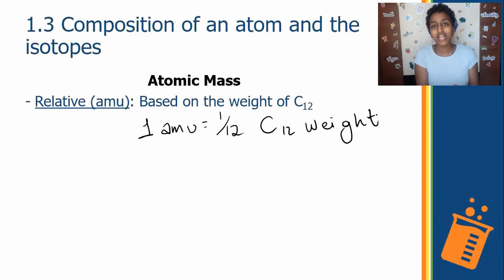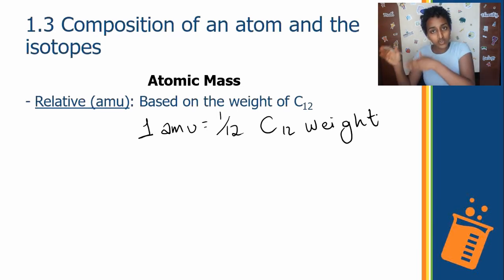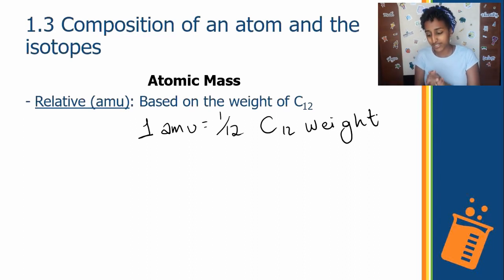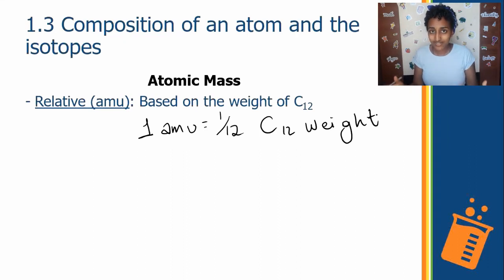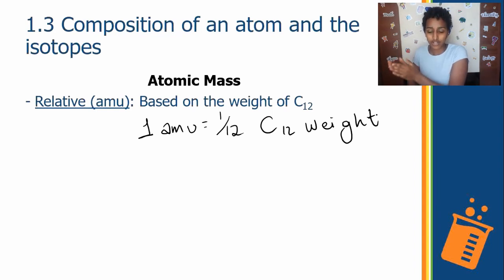The weight of all elements is based on the known standard weight of carbon-12. 1/12th of carbon-12 gives you one atomic mass unit, and all other elements are measured relative to this. You don't have to memorize this value — just understand why it's called 'relative': it's relative to the standard of carbon-12.